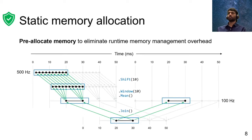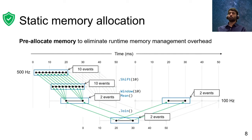Next, LiveStream tries to estimate the memory required to store all the intermediate event data, by counting the maximum number of events that can fall into these intervals. LiveStream then pre-allocates the memory required to store these events during query compile time, thus almost entirely eliminating the runtime memory management overhead.